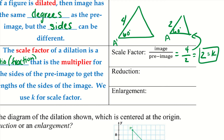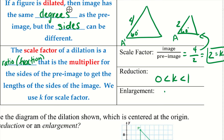To decide reduction or enlargement: a reduction has a scale factor between 0 and 1 — less than 1 but greater than 0. An enlargement has K greater than 1. So when you're trying to figure out whether something is a reduction or enlargement, take a look at the scale factor and figure out which one it is.